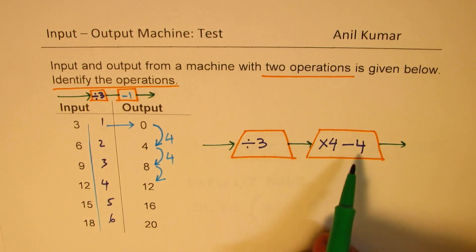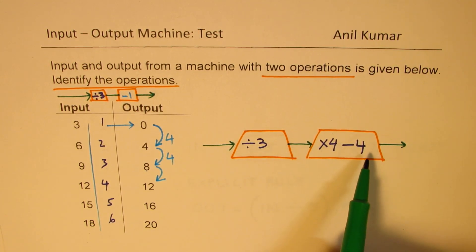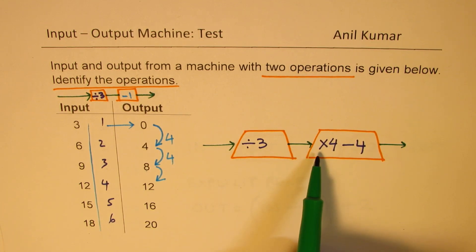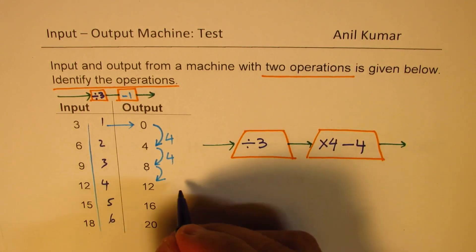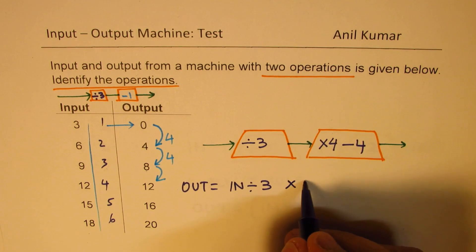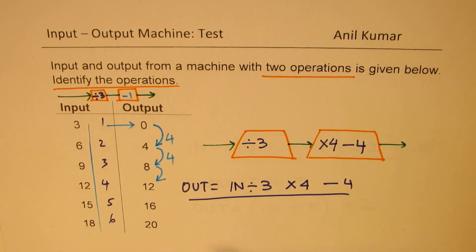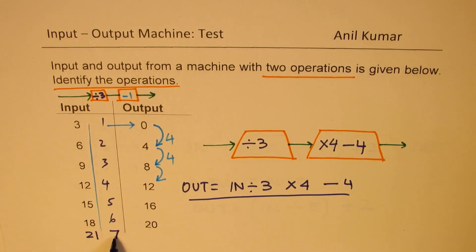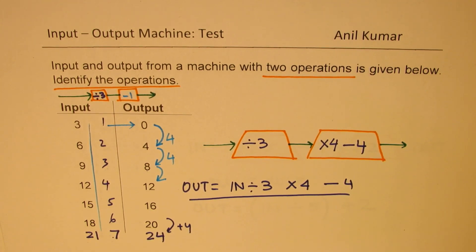We are not doing fractions here. The first machine divides by 3, the second multiplies by 4 and then subtracts 4. The explicit rule is: output = (input ÷ 3) × 4 − 4. If I substitute the next multiple of 3, which is 21: 21 ÷ 3 = 7, then 7 × 4 = 28, then 28 − 4 = 24. It works!